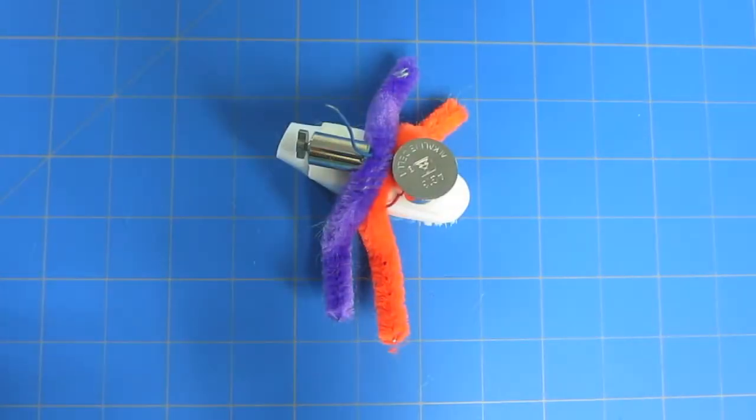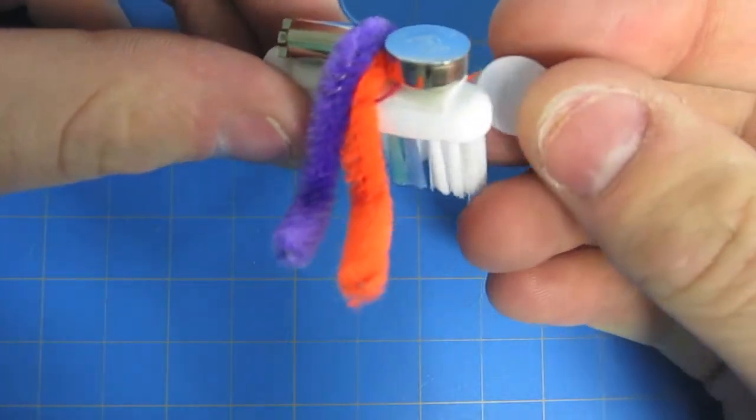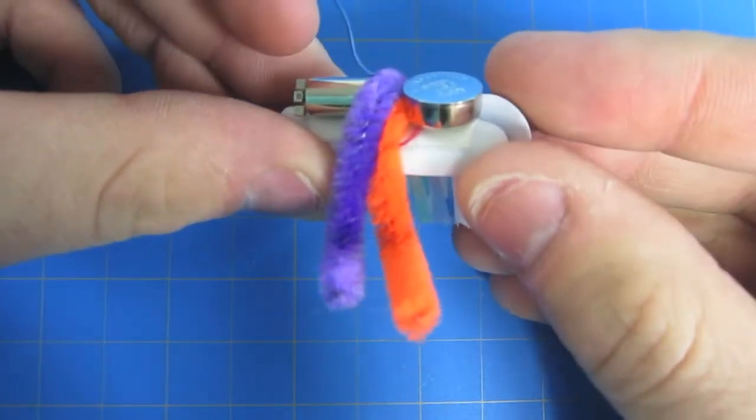Use the two googly eyes by peeling off the back protective layer and using the sticky side to stick onto your Bristlebot.